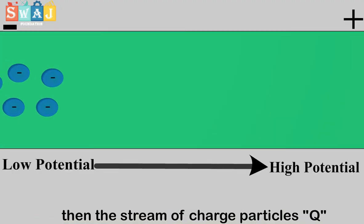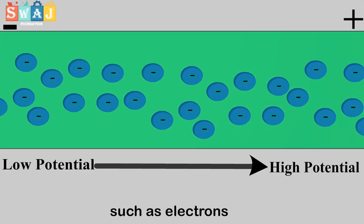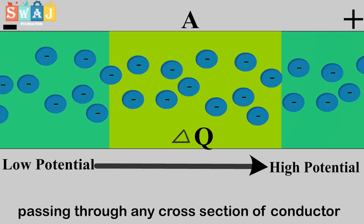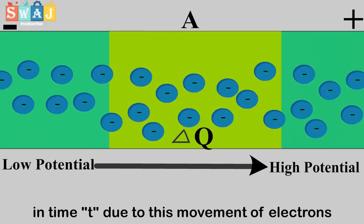then the stream of charged particles ΔQ, such as electrons, passes through any cross section of conductor in time Δt.